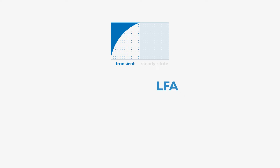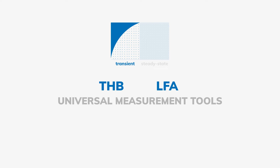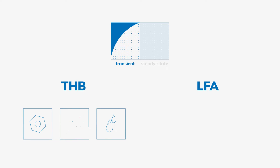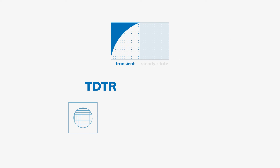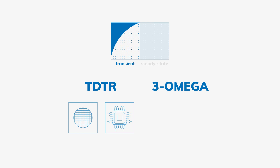The laser flash and transient hot bridge methods are universal measurement tools. The THB is used mainly for manual measurements and temperatures up to 200 degrees Celsius. The laser flash method is designed primarily for automated measurements and high-temperature tests up to 2,800 degrees Celsius. The TDTR method can be used on silicon wafers to develop high-performance computer chips. The three omega method is used, for instance, for organic semiconductors in liquid form to produce printable circuits or solar cells.